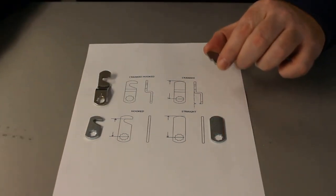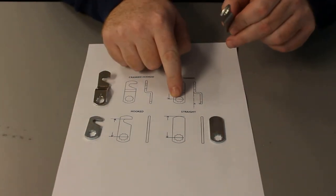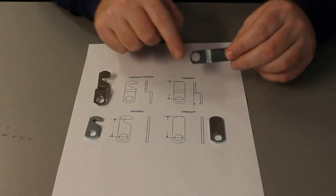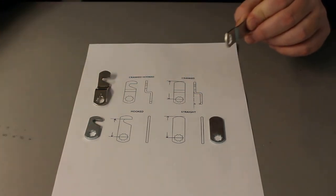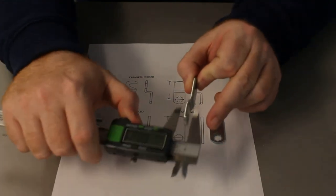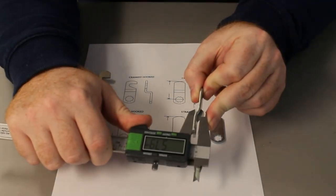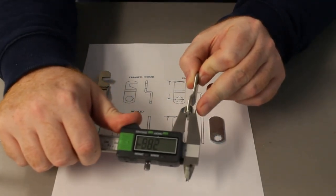And for the cranked cam, you measure from the centre of the fixing hole to the tip of the cam. And you also need a second measurement, which is the depth of the crank. This is the depth of the crank, minus the thickness of the cam.